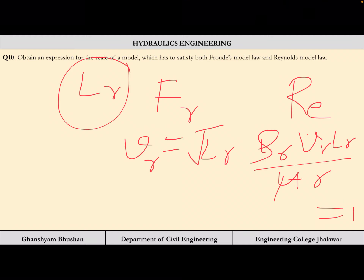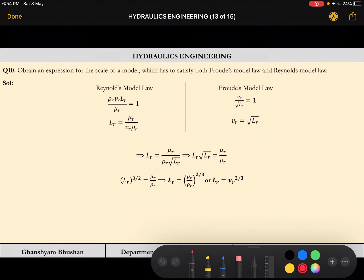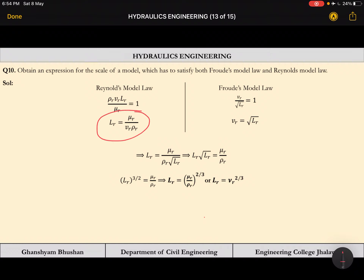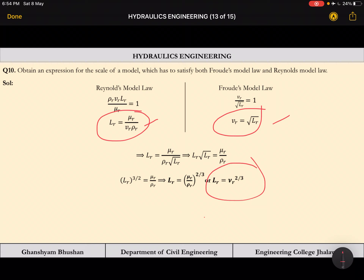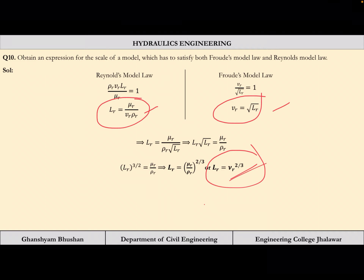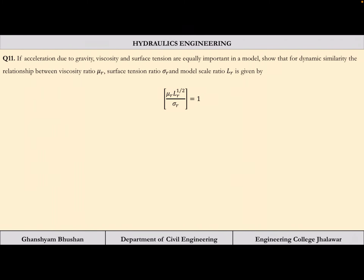From Froude law: Vr = sqrt(Lr). From Reynolds law: rho_r * Vr * Lr / mu_r = 1. Substituting Vr = sqrt(Lr) into the Reynolds equation and solving for Lr gives Lr = (mu_r / rho_r)^(2/3) = nu_r^(2/3), where nu_r is the kinematic viscosity ratio. The key first step is substituting one law's Vr expression into the other.